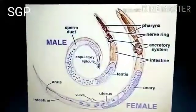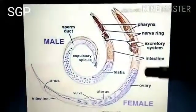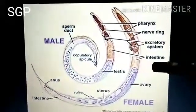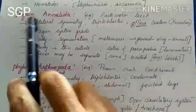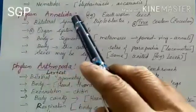Aschelminthes cause diseases like elephantiasis and ascariasis. This is the example structure for Aschelminthes.